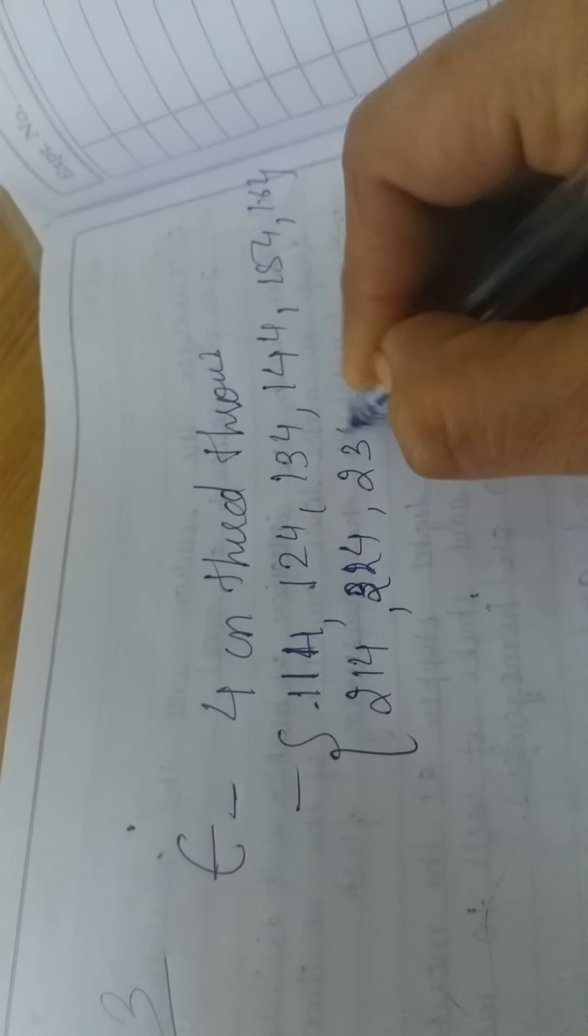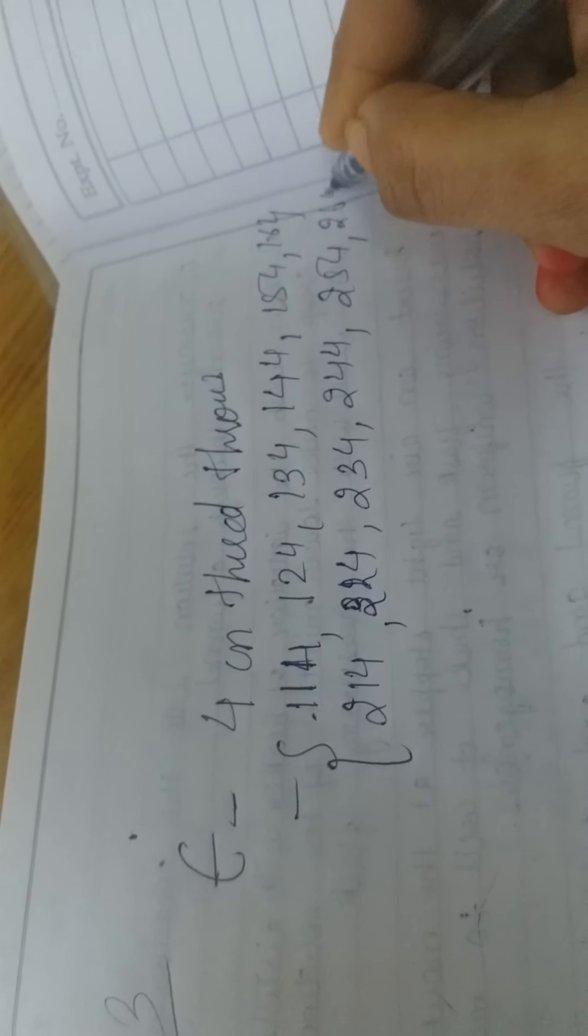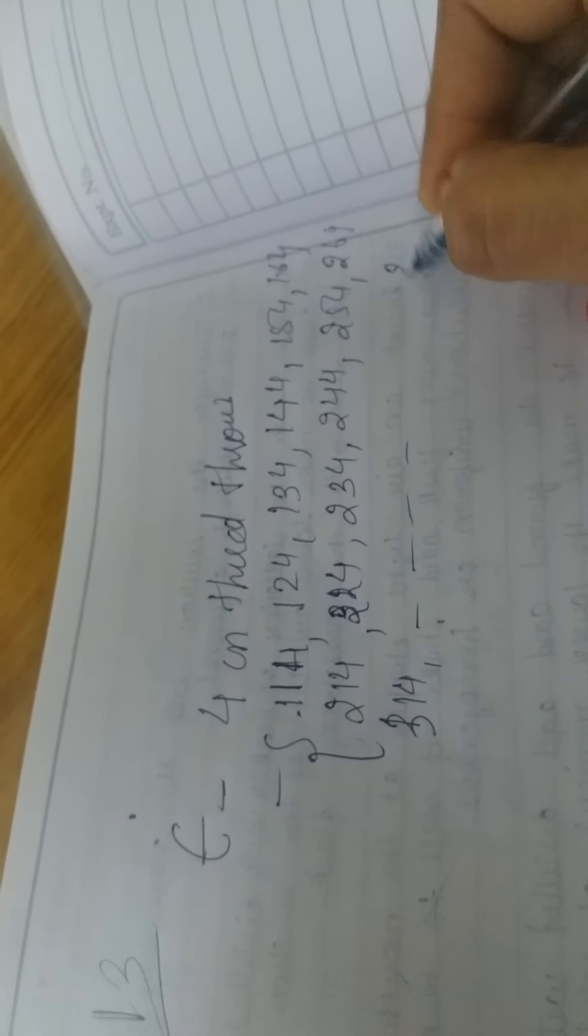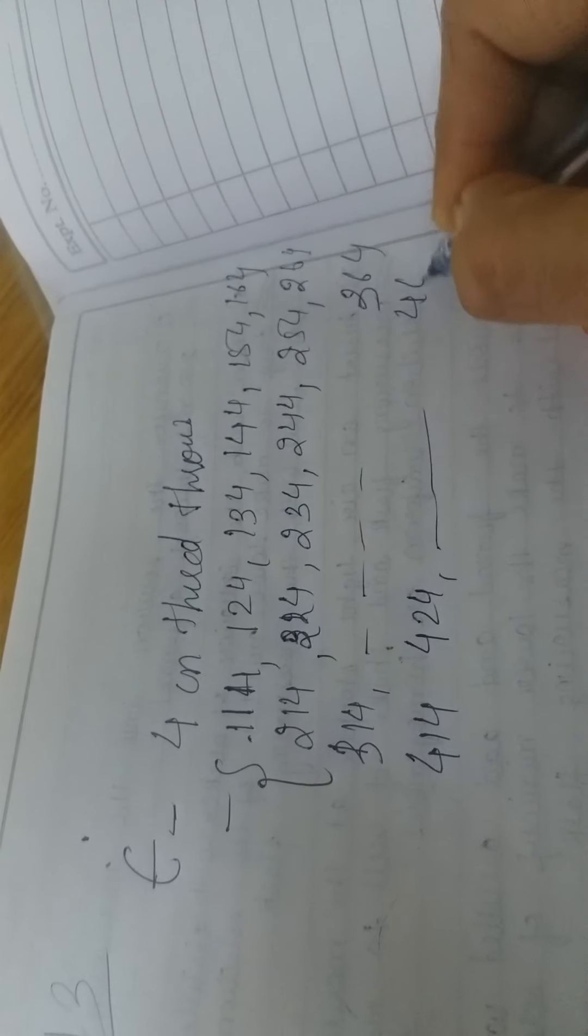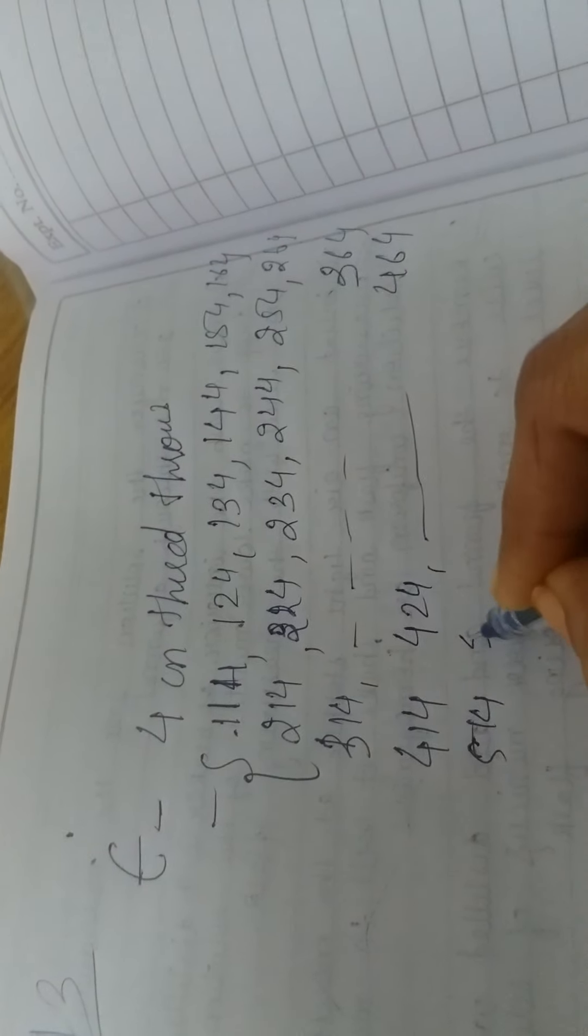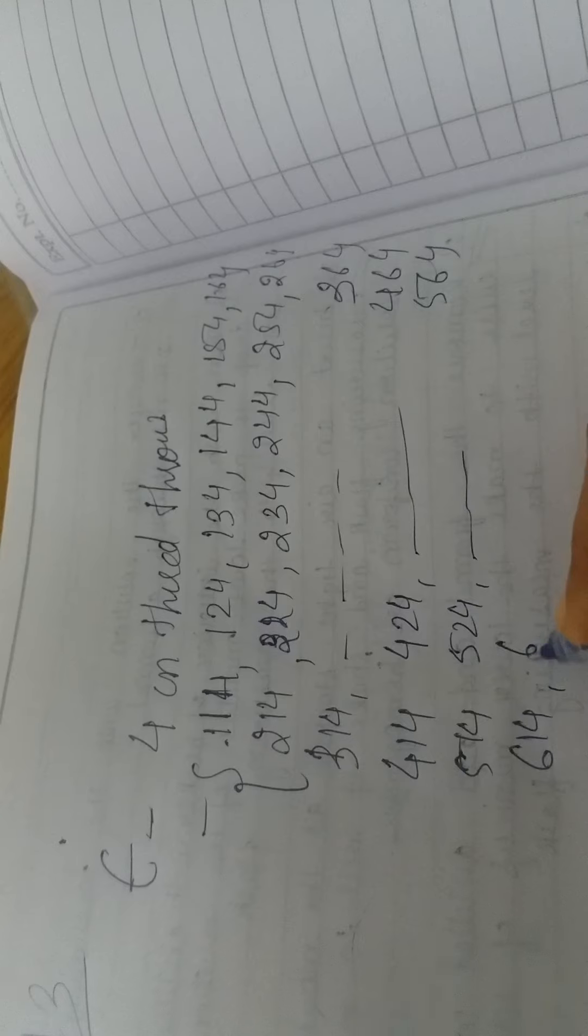3rd throw is 4. So 1, 1, 4; 1, 2, 4; 1, 3, 4 up to 1, 6, 4. Then 2, 1, 4; 2, 2, 4; 2, 5, 4. Keep one constant and vary the other. Similarly 3, 1, 4 up to 3, 6, 4. Then 4, 1, 4; 4, 2, 4 up to 4, 6, 4. Then 5, 1, 4; 5, 2, 4 up to 5, 6, 4. Then 6, 1, 4; 6, 2, 4 up to 6, 6, 4. This is E condition.